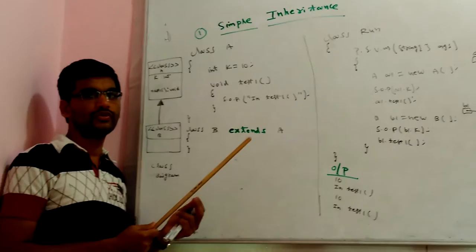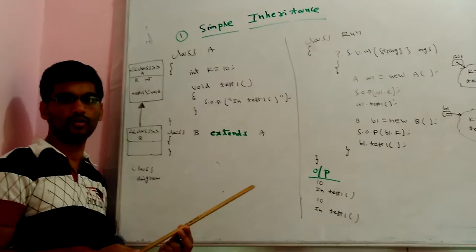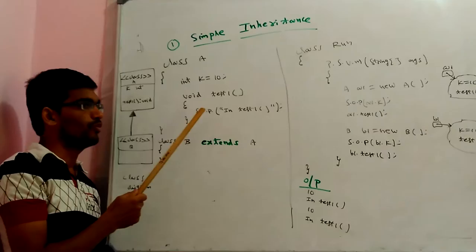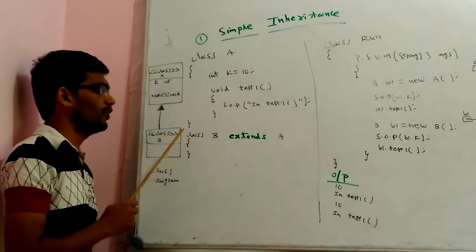We are discussing the inheritance part in Java. In Java, only simple inheritance and multilevel inheritance are supported. These are the two types. Now we are going to see simple inheritance — what the class diagram looks like and what program we are going to see.